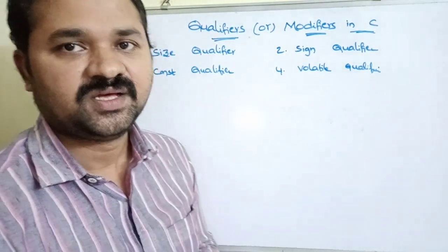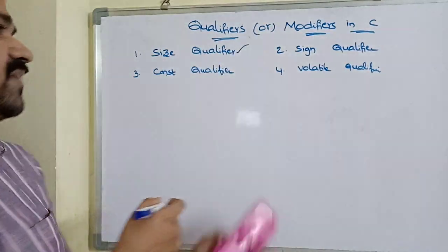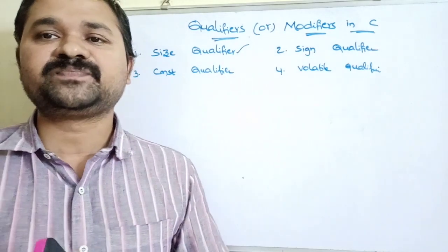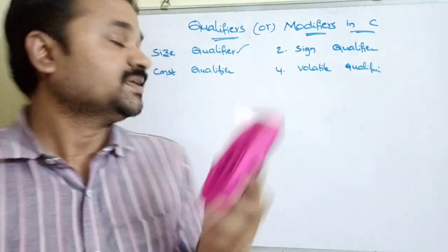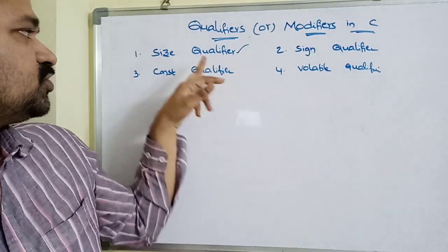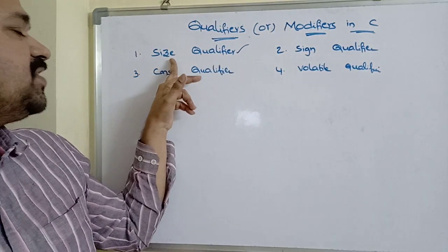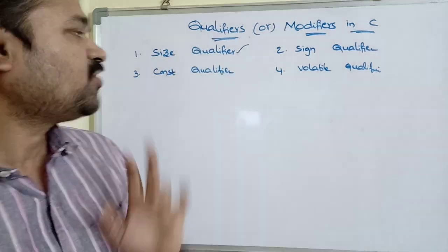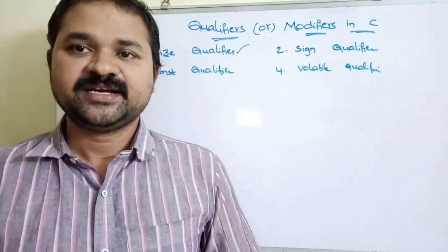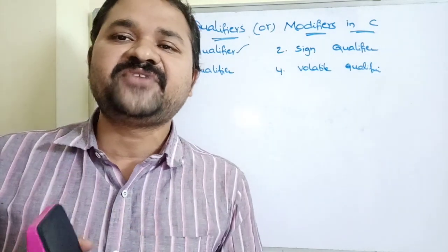The first one is the size qualifier. It is mainly useful in order to change the size of the basic data type. The name itself specifies the meaning — if we want to change the size of a basic data type then we use a size qualifier. There are two types of size qualifiers available.